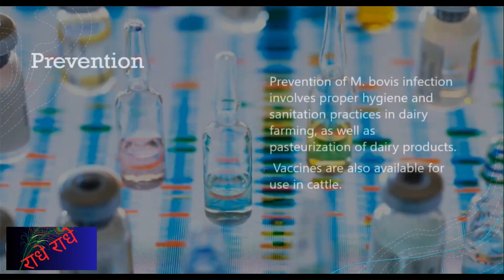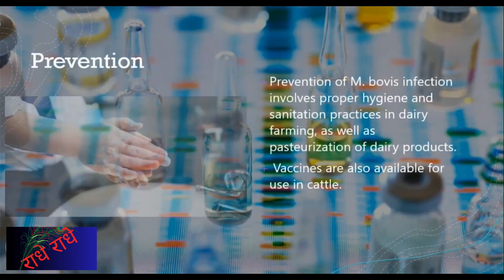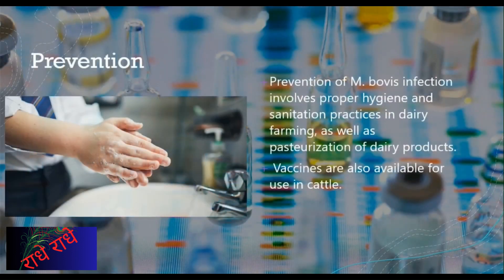Proper hygiene and sanitation practices on dairy farms, as well as the pasteurization of all dairy products, are key to preventing infection by Mycobacterium bovis. Vaccines are also available to protect cattle from this infection.